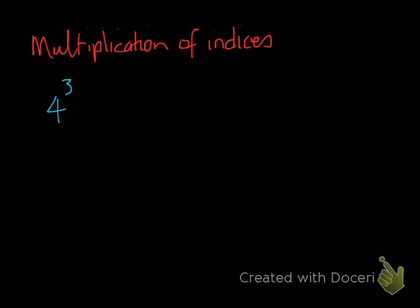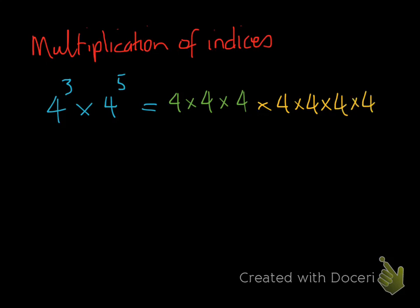Let's take 4 to the power of 3 and multiply it by 4 to the power of 5. The first way I want to show you is the expansion method — I want to expand each of these and rewrite them in expanded form. So 4 to the power of 3 actually means 4 times 4 times 4, and 4 to the power of 5 actually means 4 times 4 times 4 times 4 times 4.